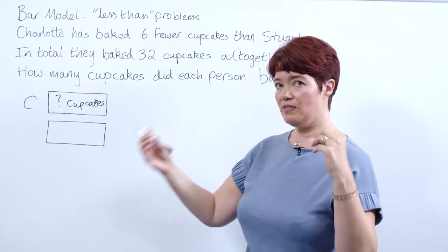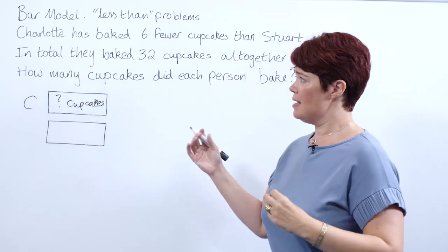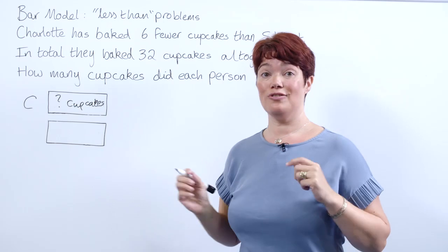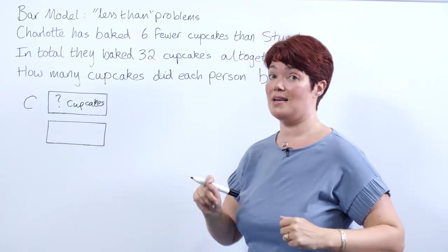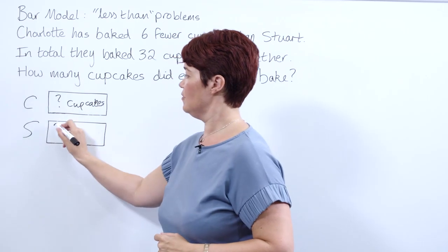Now, because addition and subtraction are related and have an inverse relationship, we know Charlotte has six fewer. This also means Stuart, looking at it from the other side, has six more cupcakes. So Stuart starts with the same number of cupcakes as Charlotte, but he has baked six more cupcakes.